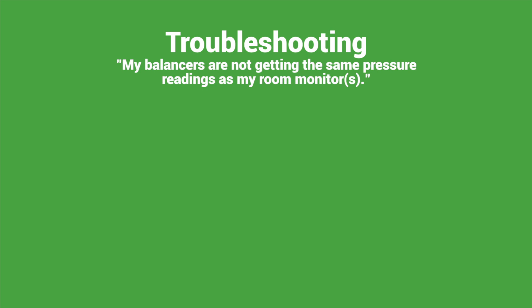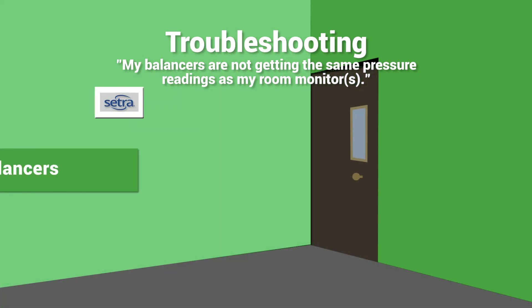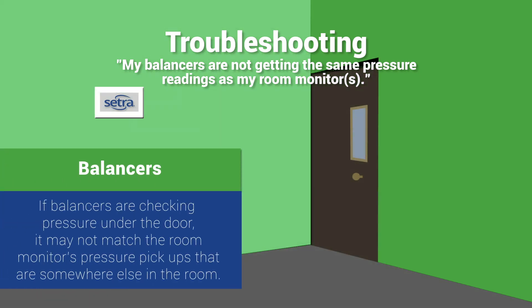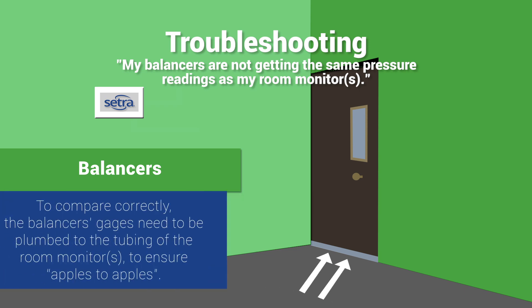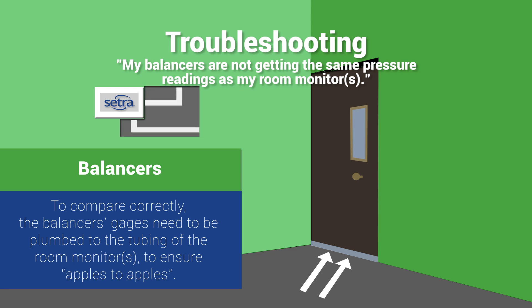My balancers are not getting the same pressure readings as the room monitors. Many times balancers check the pressure under the door of a room and it may not match that of the room monitors whose pressure pickups are somewhere else in the room. To compare correctly, the balancers' gauges need to be plumbed into the tubing of the room monitors to ensure you're comparing apples to apples.